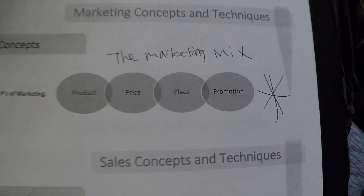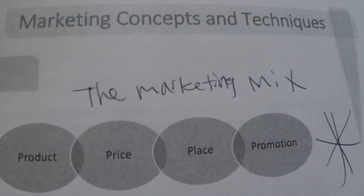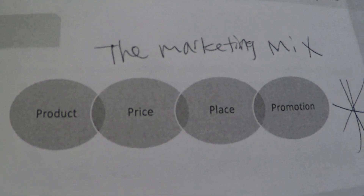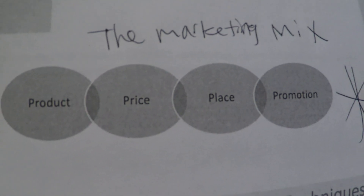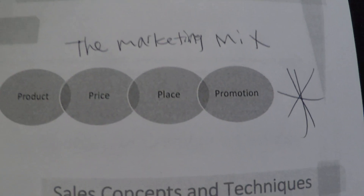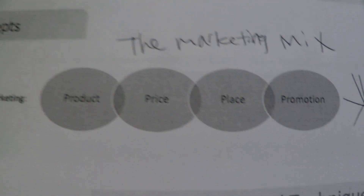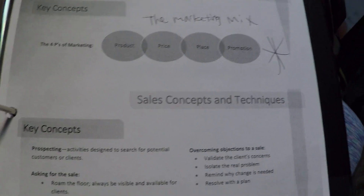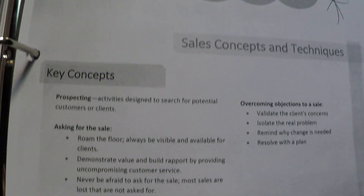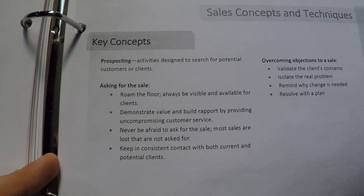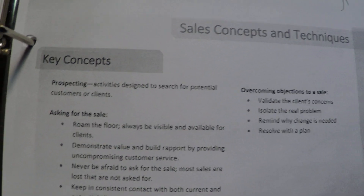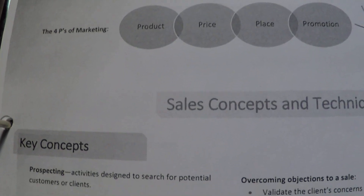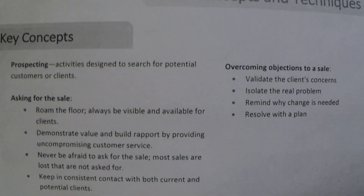The marketing mix - I didn't read that part of the book but the four P's of marketing and the marketing mix are the same thing. A question asks which is part of the marketing mix, and the answer involves product, price, place, and promotion. There was also a question about when you're at the front desk, not with a client, and someone comes in - what is it called when you start talking to them? It might be prospecting, but I'm not sure.